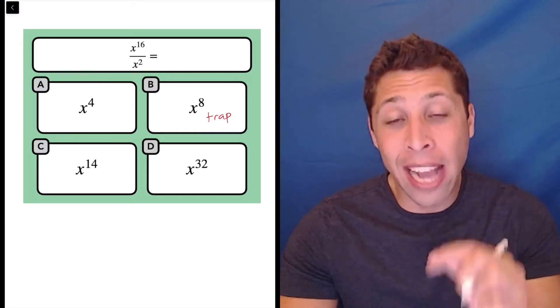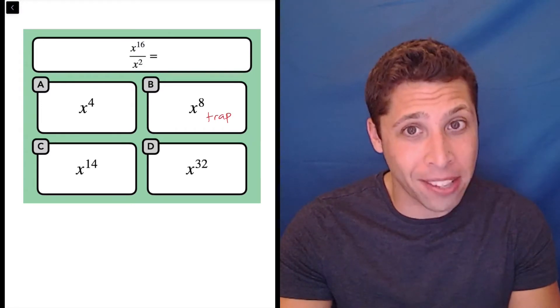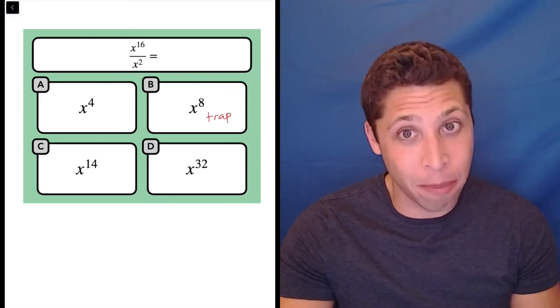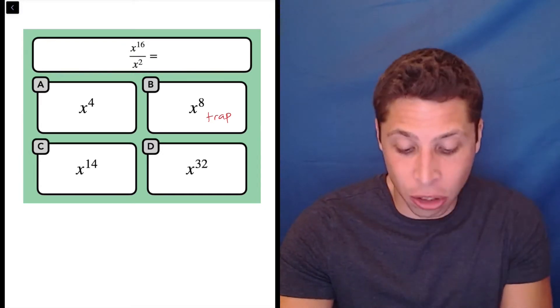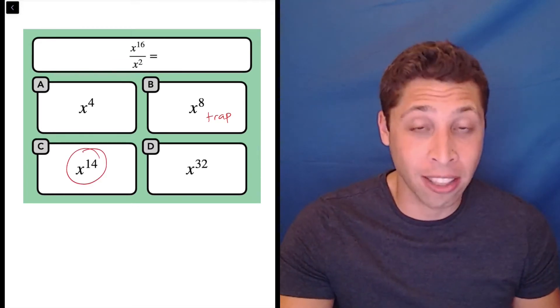When we have exponential numbers of the same base and we are dividing them, we subtract the exponents. So 16 minus 2 is 14, x to the 14th.